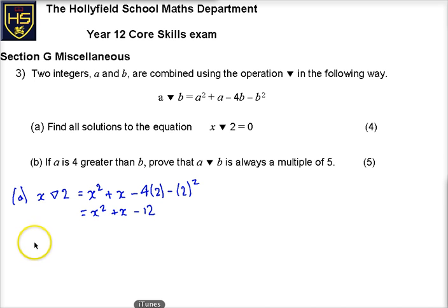So we're now asked, if we're asked to solve, this is really irritating me, this little thing at the bottom. If we're asked to solve, oh it's back, X triangle 2 equals 0, what we're really asked to solve is X squared plus X minus 12 is equal to 0.